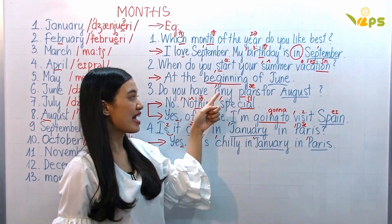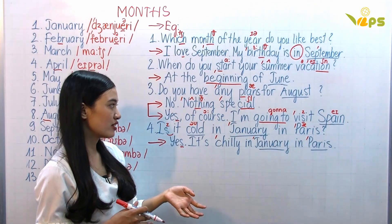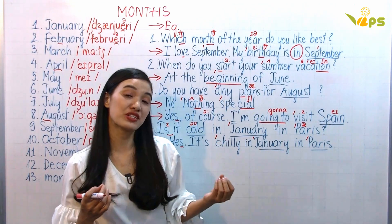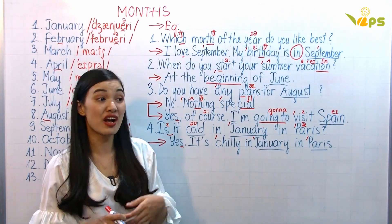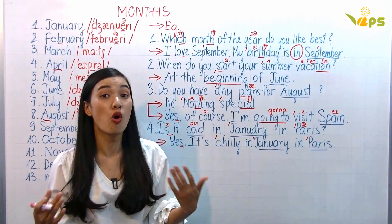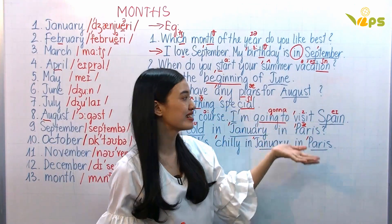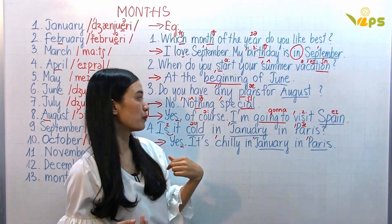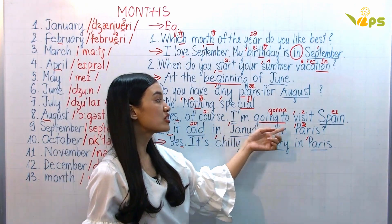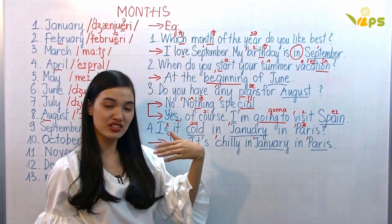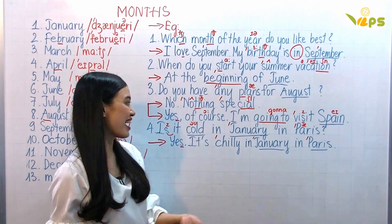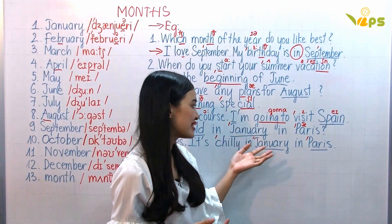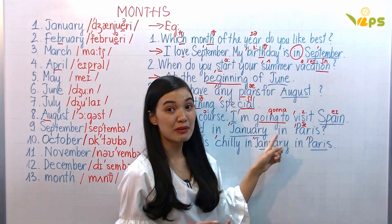Number three: Do you have any plans for August? For example, if it's currently June or July and you ask a friend: do you have any plans for August — meaning, what are you going to do? You can answer: No, nothing special. Or: Yes, of course, I'm going to visit Spain. In communication we use the short form 'gonna': I'm gonna visit Spain.